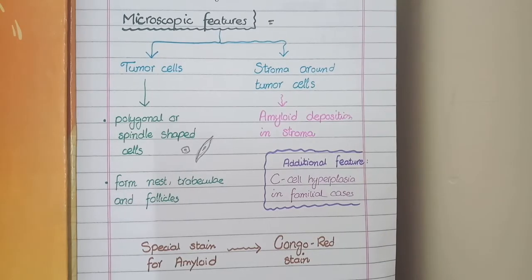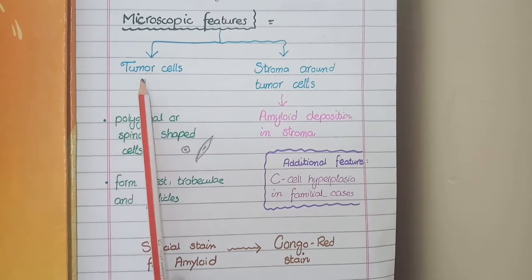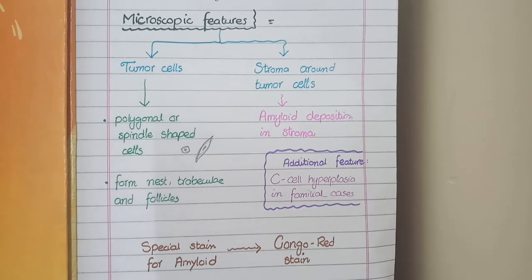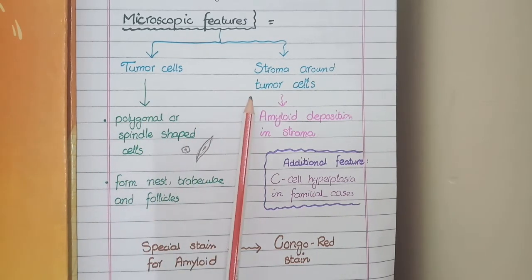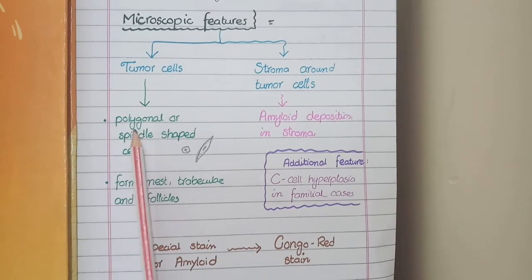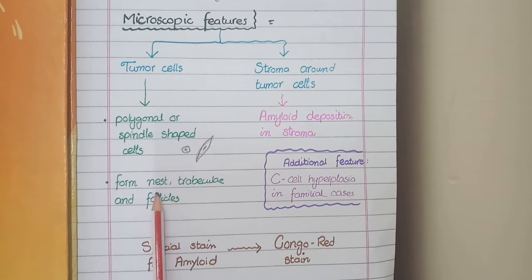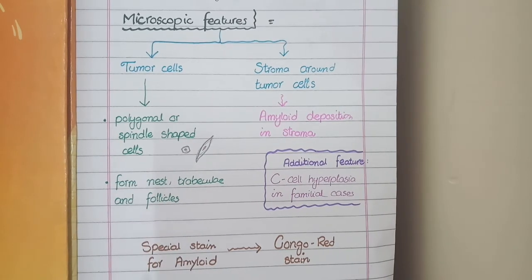For microscopic features of medullary carcinoma of thyroid, you need to focus on two things: how the tumor cells appear and how the stroma around the tumor cells appears. The tumor cells in medullary carcinoma are polygonal or spindle shaped cells, and they arrange to form nests, trabeculae, and follicles.